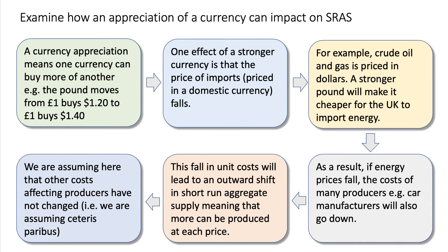As a result — connective phrase — if energy prices fall, the costs of many producers, car makers for example, will also go down. This fall in unit costs will lead to an outward shift in short-run aggregate supply, meaning that more output can be supplied at each price level. Crucially, we are assuming here that other costs have not changed — we're assuming ceteris paribus.